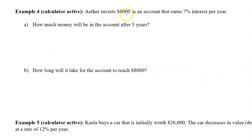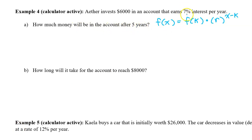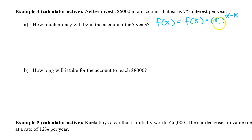Example 4. Aether invests $6,000 in an account that earns 7% interest per year. Part A: How much money will be in the account after 5 years? If the output values of a function change at a constant percentage rate, the function is an exponential function, and it can be modeled by the equation f(x) = f(k) times r to the x minus k power, where f(k) is a known value of the function and r is the common ratio.